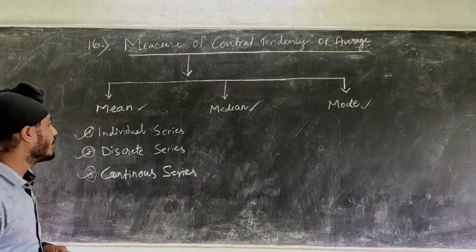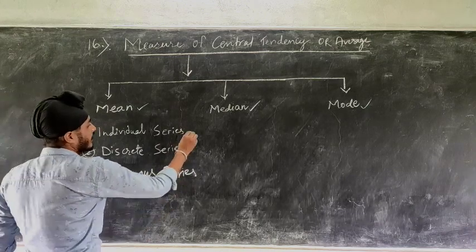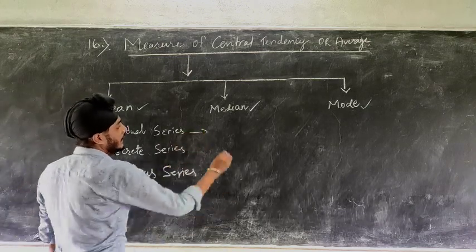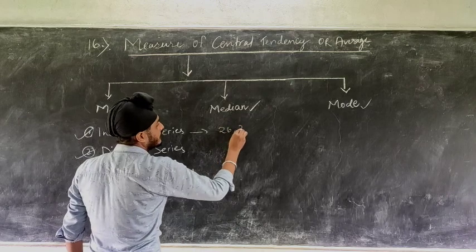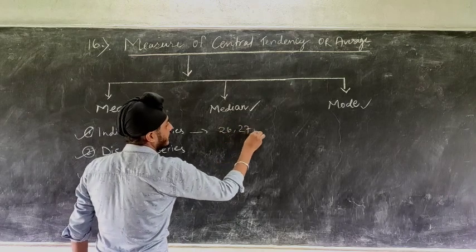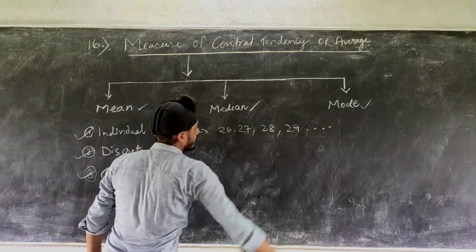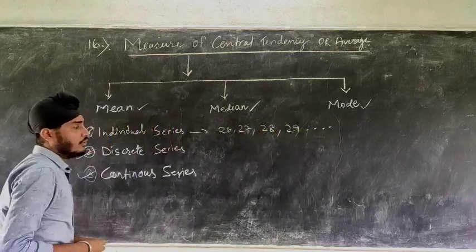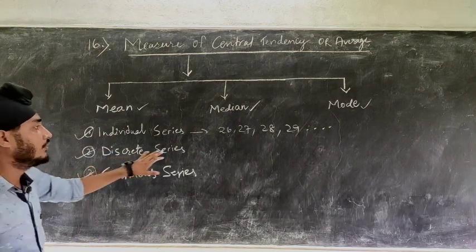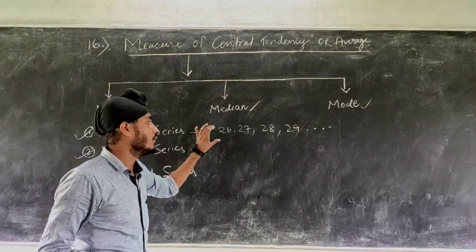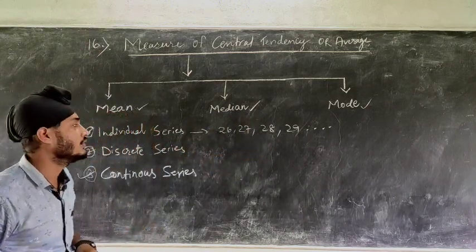When we talk about individual series, it means a set of numbers will be given — for example, 26, 27, 28, 29 and so on. This is individual series. You can see only one chain of numbers will appear in the question.